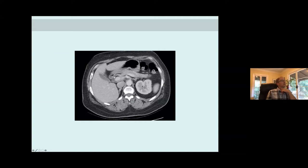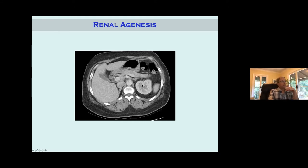Here's an example of a CT scan — an axial view right through where the kidneys would be. You can see here a normal kidney with nice uptake, but contralaterally you don't see anything. This is an example of renal agenesis where either the ureteric bud didn't hit the metanephros, or there was no ureteric bud or mesonephros.